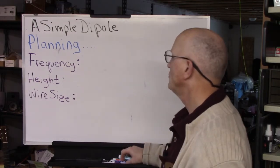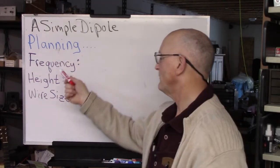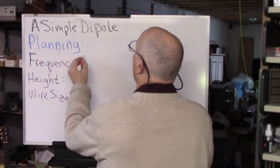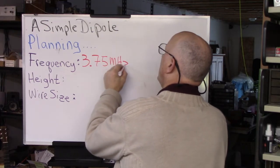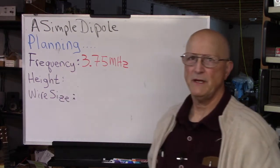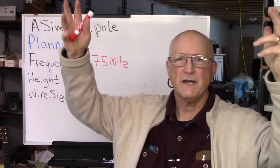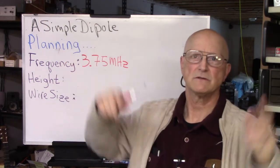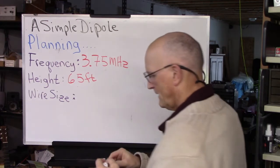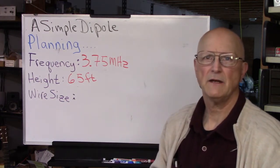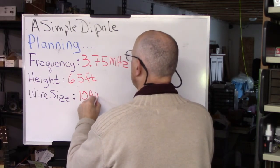The first step in modeling a simple dipole is planning. You have to answer certain questions. First, what frequency is this antenna for? We have determined we are going to make an 80 meter antenna with its center at 3.75 MHz. How high is it going to be off the ground? Because that does make a difference in how the antenna models and tunes. We have a couple of really nice big tall trees, so our antenna is going to be suspended at 65 feet off the ground.